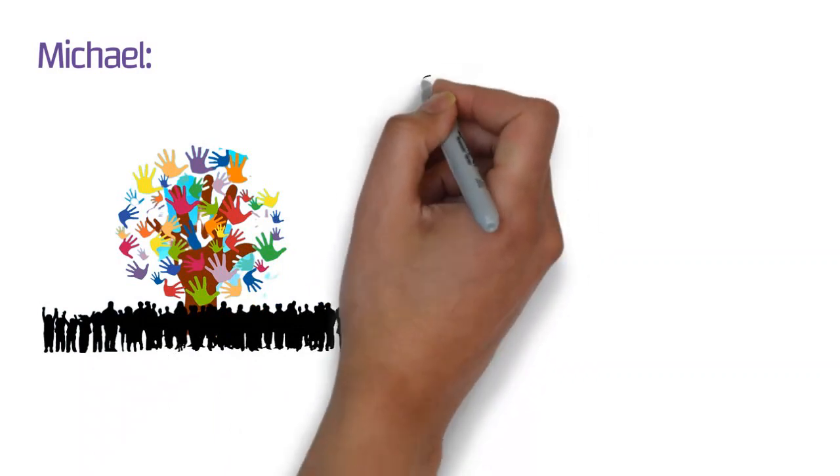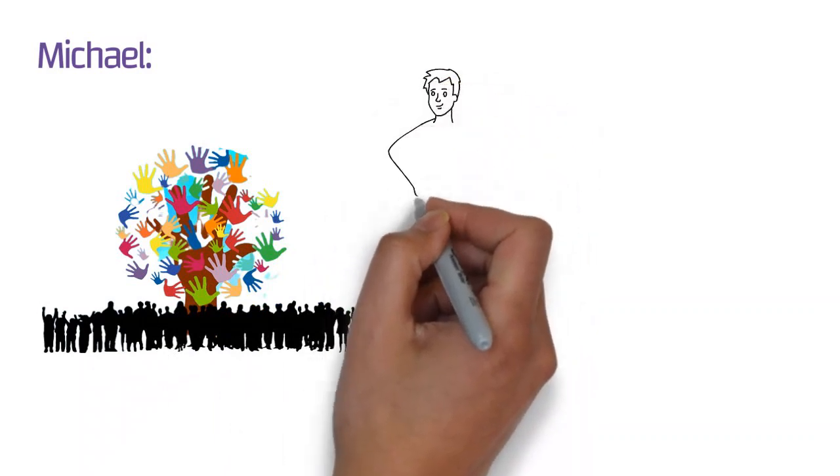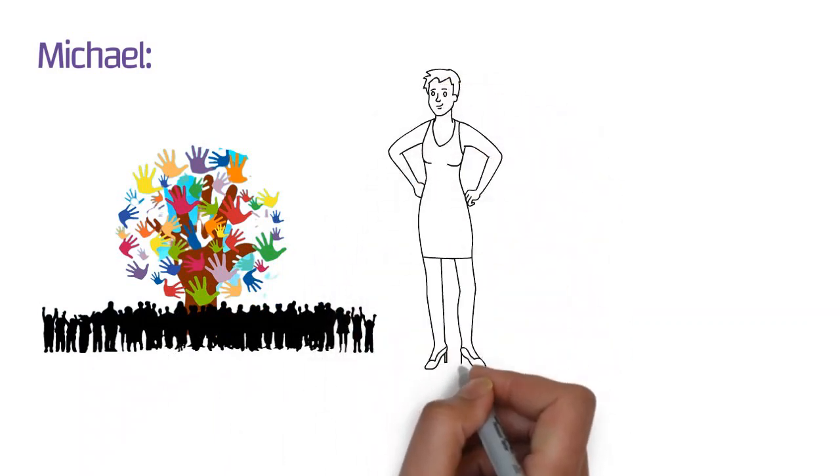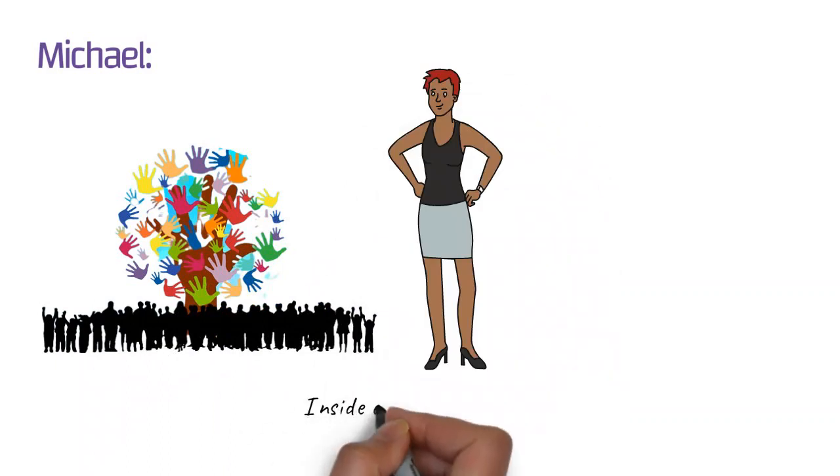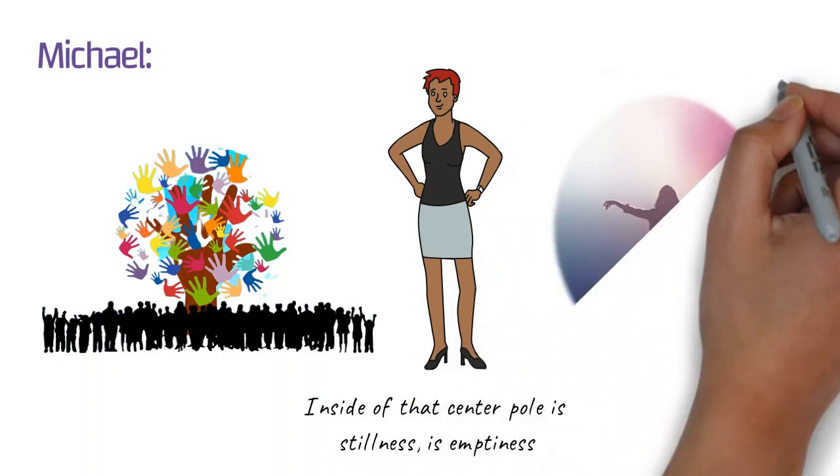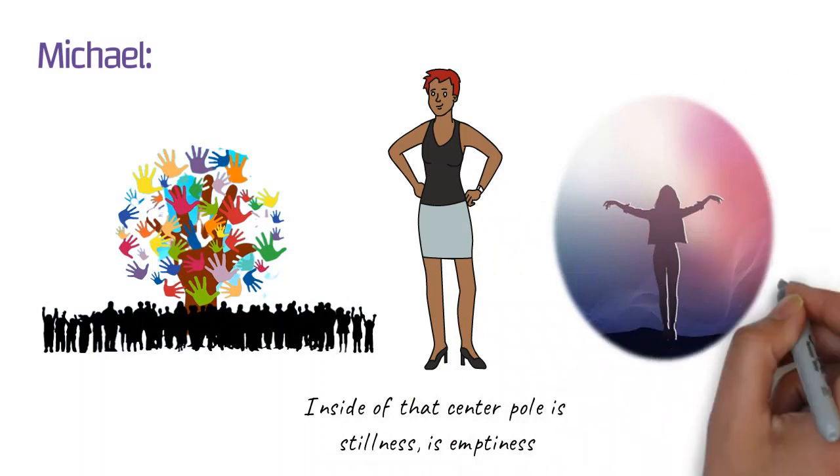If we imagine our energy system as having a center pole that goes from the top of our heads all the way down to our perineum, and inside of that center pole is stillness, is emptiness. From that stillness, if we can then enter life, we enter life with freedom, we can enter life with joy.